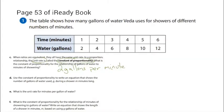The next part says: use the constant of proportionality to write an equation that shows the number of gallons used during a nine-minute shower, using G for gallons and M for minutes. The number of gallons depends on the number of minutes. When I think about the word 'depends,' that tells me gallons equals something times my number of minutes. So the gallons is equal to two times the number of minutes.